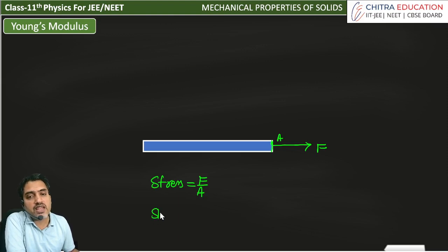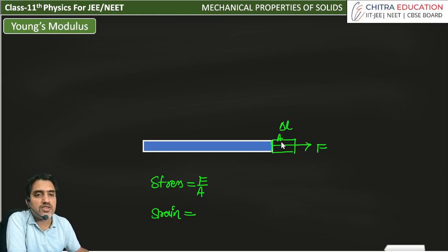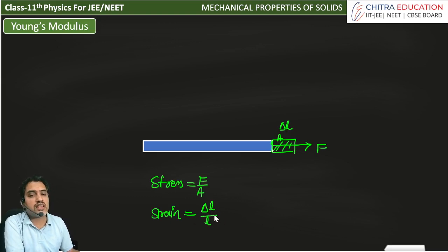And what is strain here? If its length here is increased by delta L, then strain is delta L divided by the original length L. That means change in length divided by original length.